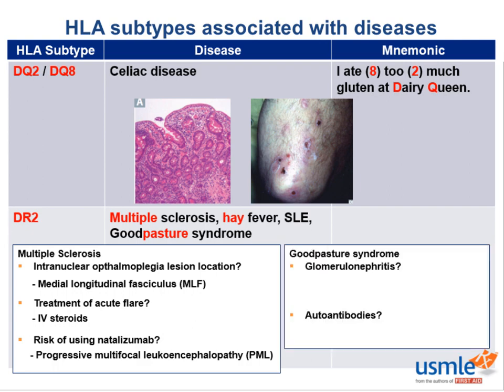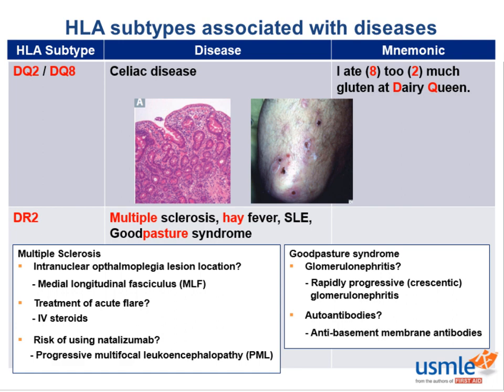Goodpasture syndrome is associated with rapidly progressive or crescentic glomerulonephritis. The autoantibodies are anti-glomerular basement membrane antibodies. To summarize HLA-DR2: multiple sclerosis, hay fever, SLE, and Goodpasture syndrome — the mnemonic is 'multiple hay pastures are dirty.'